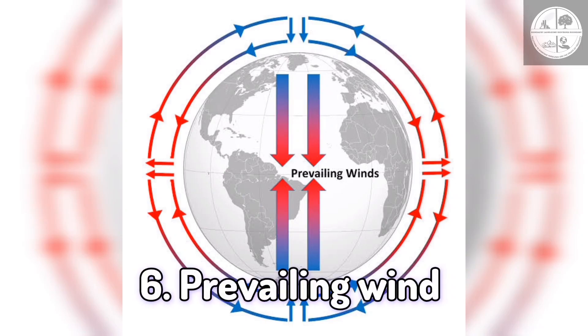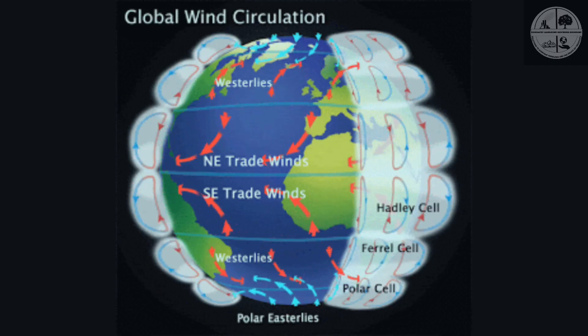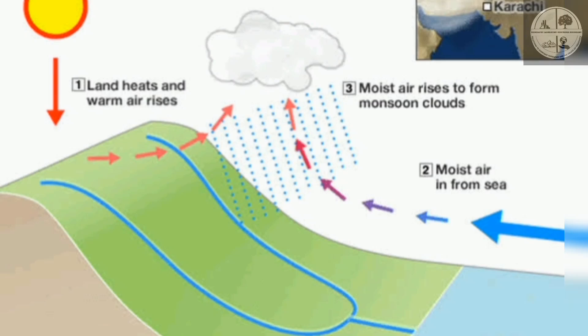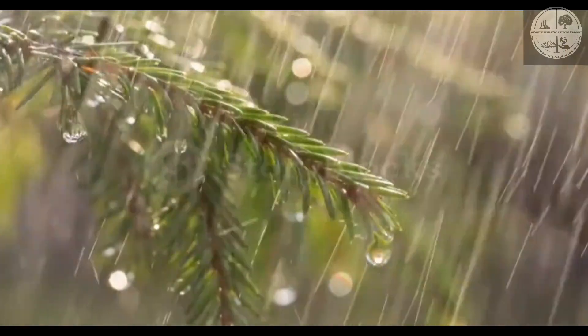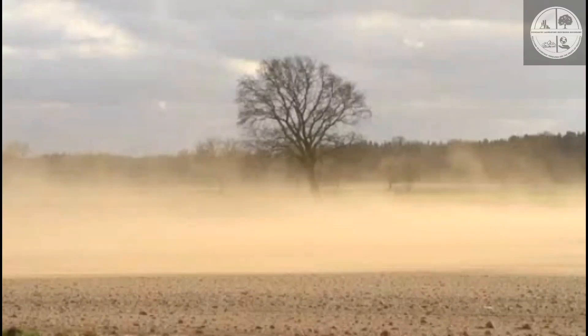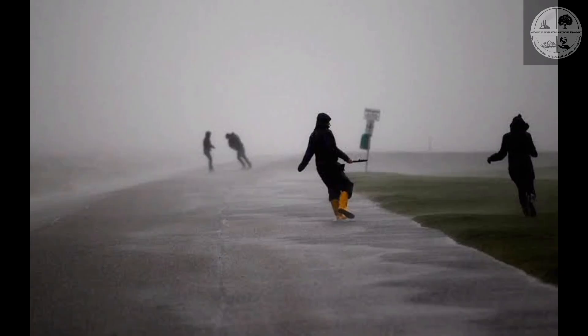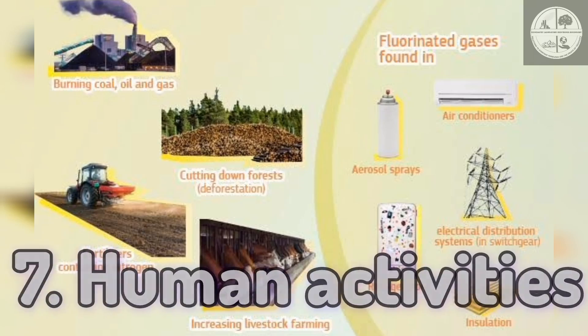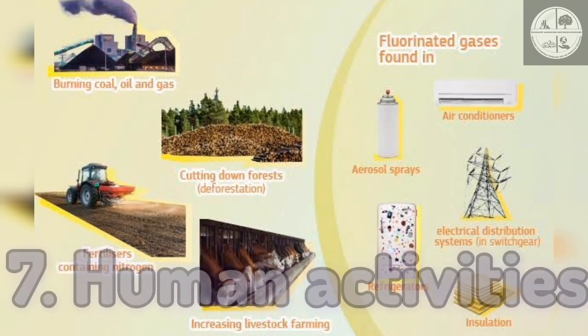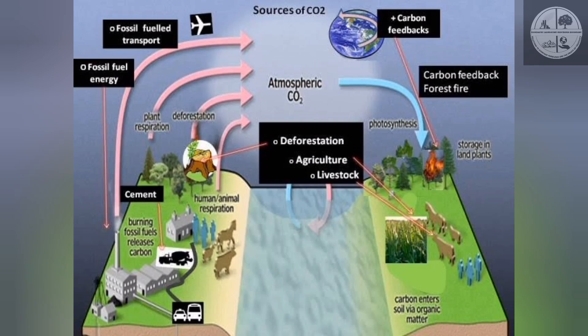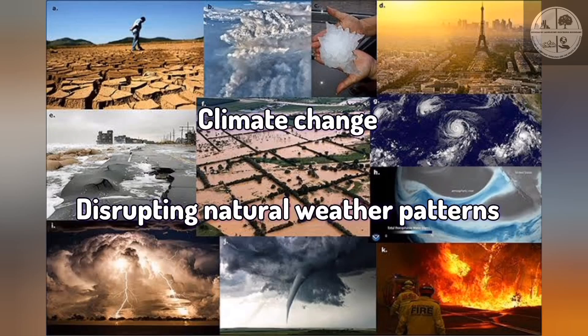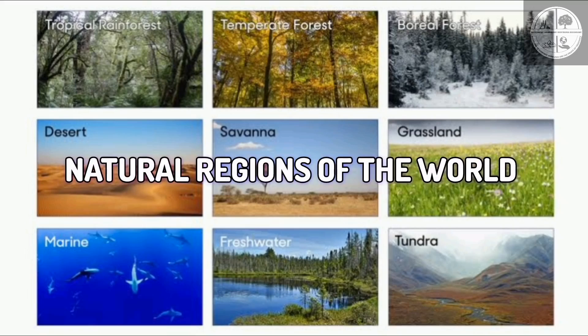Number six: prevailing winds. Winds move heat and moisture from one region to another. Winds blowing from the ocean bring moisture, while winds from dry land often lead to dry conditions. Number seven: human activities. Human actions are increasingly influencing climate — urban development, deforestation, and industrial emissions have led to climate change, disrupting natural weather patterns.